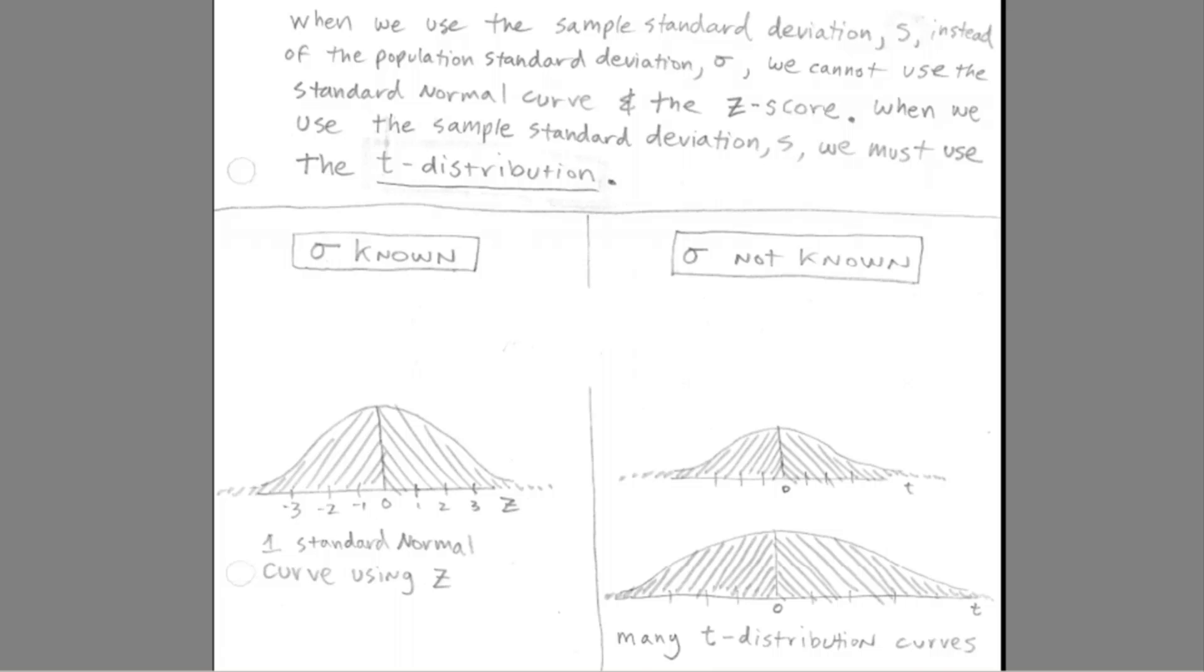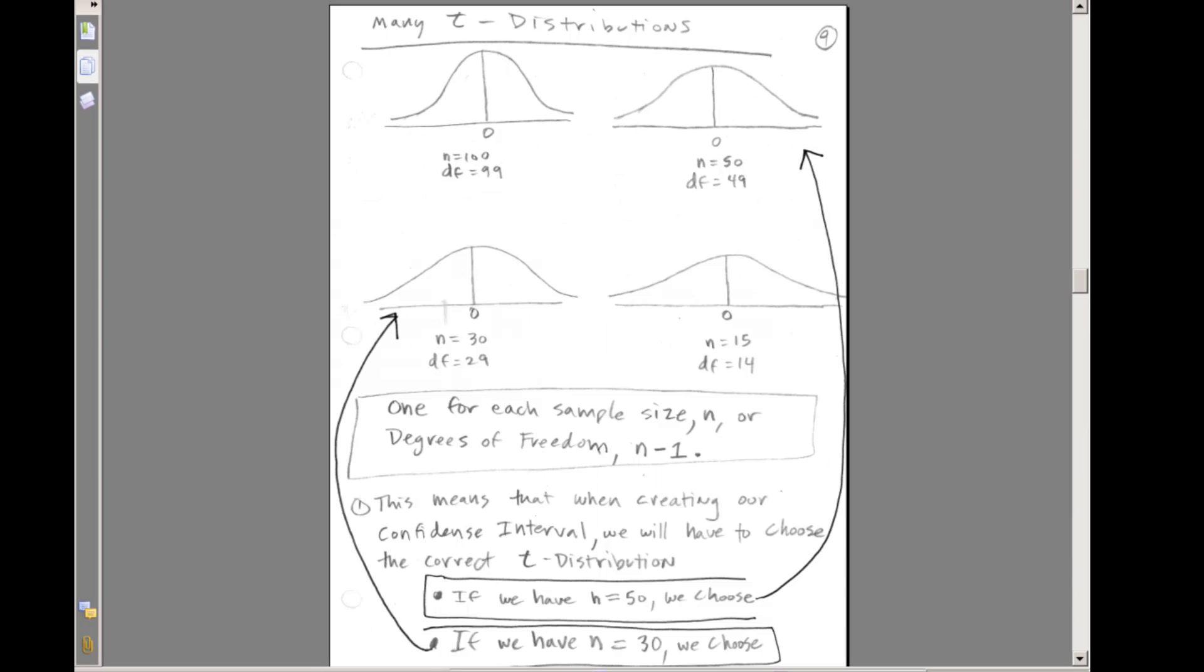And there are many t-distributions. Here's the t-distribution if our sample size is 100, 50, 30, or 15. There's lots of t-distributions, and each one is based on sample size n, or the parameter degrees of freedom, where we take the sample size minus the number of samples.